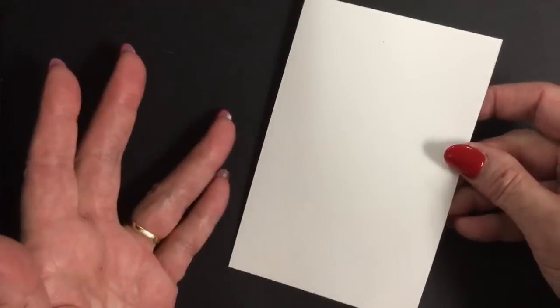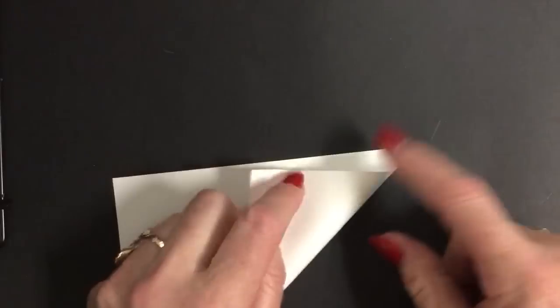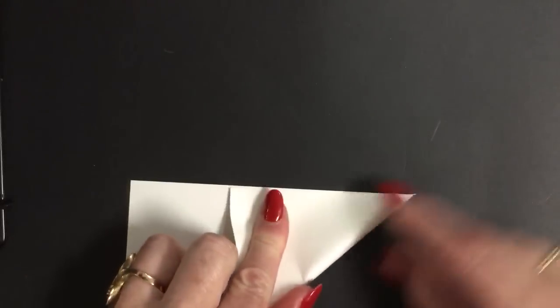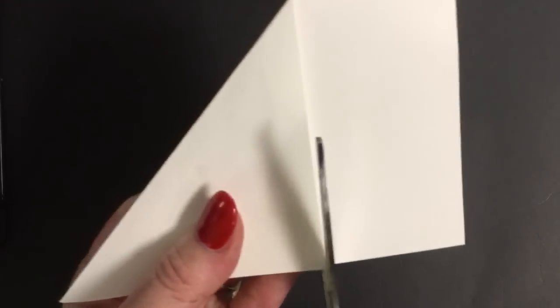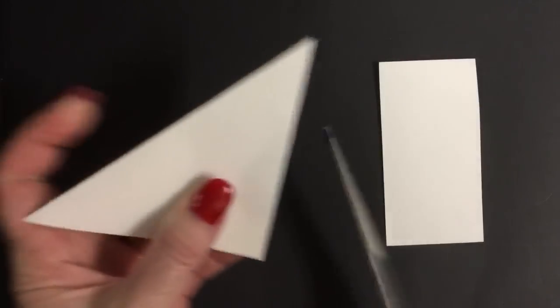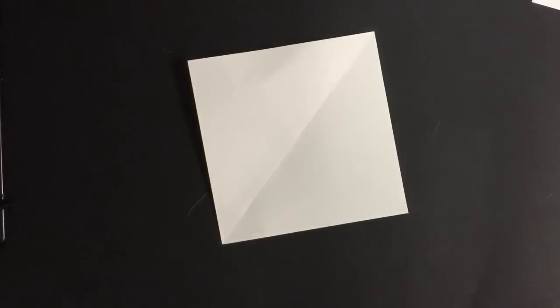If I want to make a square out of this rectangle really easily, I just simply fold the edge to this edge. When you fold these, try and be precise. Then just simply take the scissors and slice off the leftover. This piece you don't need. And this is our tessellation.